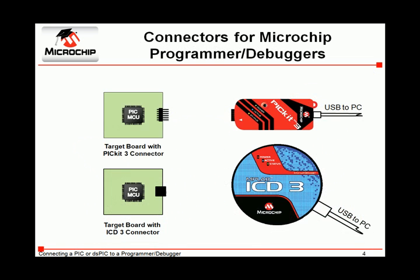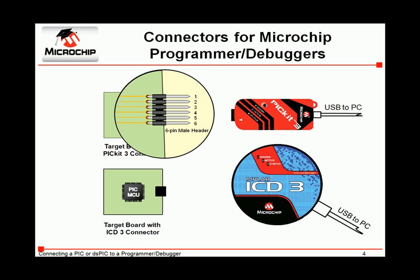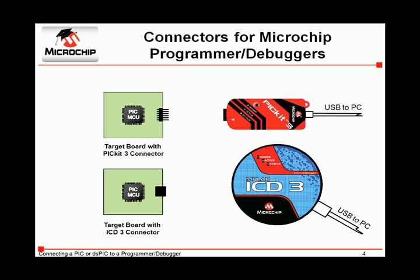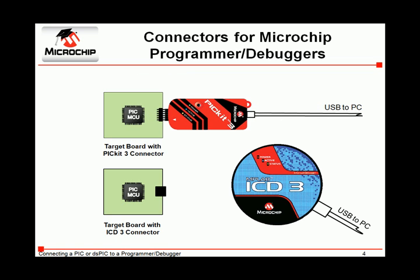For the purposes of this presentation, we will discuss the PICKIT-3 and ICD-3 in-circuit debuggers. Note that both development tools connect to the target application with a very different connector. The PICKIT-3 connects via a simple 6-pin male connection header. Traces on the PCB further connect the header to the PIC MCU or DSPIC DSC, completing the communication line.